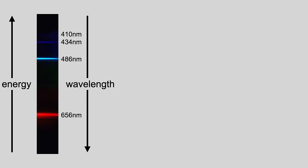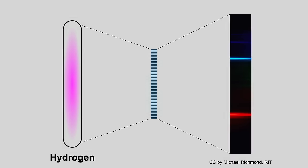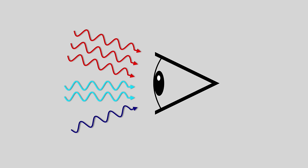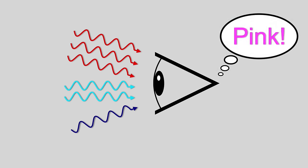Each photon has a wavelength. And together, these produce the hydrogen emission spectrum that we saw through the diffraction grating. The combination of all these photons looks pink to our eyes.